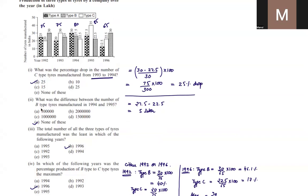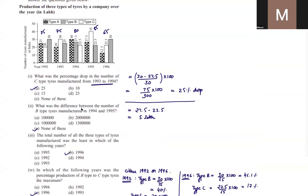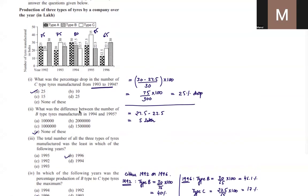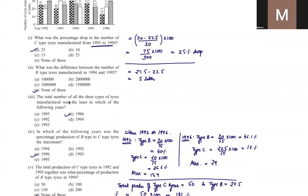The next question asks for the difference between B-type tires manufactured in 1994 and 1995. B-type is the wavy-pattern bar in the middle. The values are 27.5 and 22.5, so the difference is 5 lakh. Since this figure is not given in the options, the answer is 'none of these.'